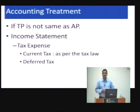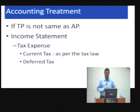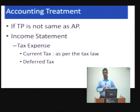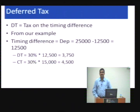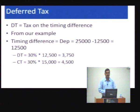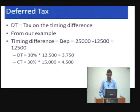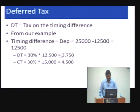The accounting treatment requires that in the income statement you show both current tax and deferred tax. Current tax is as per tax law. Deferred tax, as defined by the accounting standard, is a tax on the timing difference. In our example, the depreciation timing difference is 12,500, so the deferred tax is 30% of 12,500, which equals 3,750.